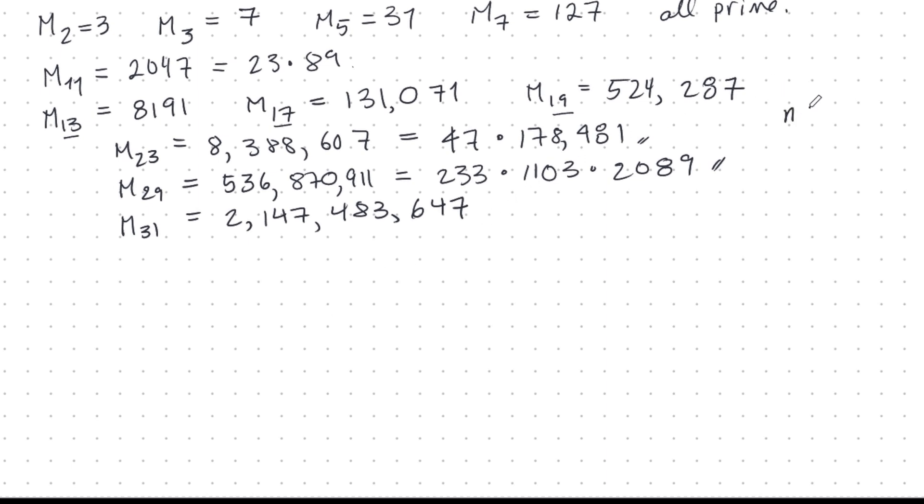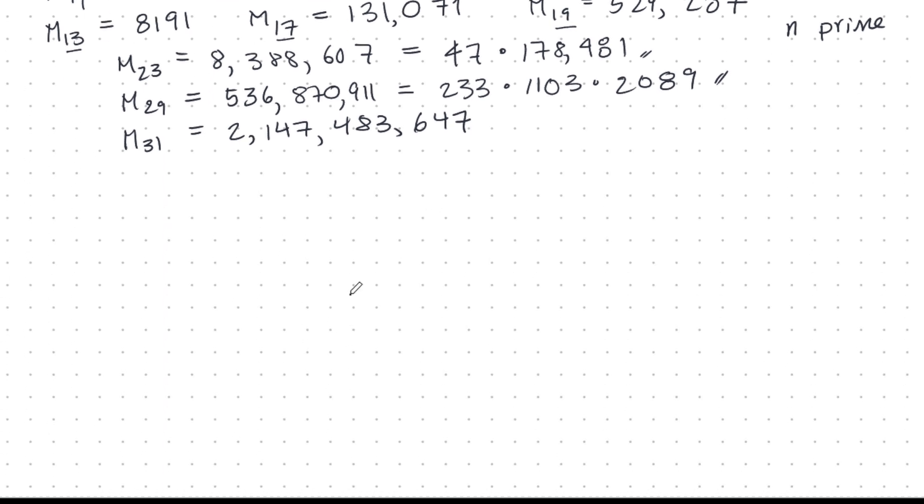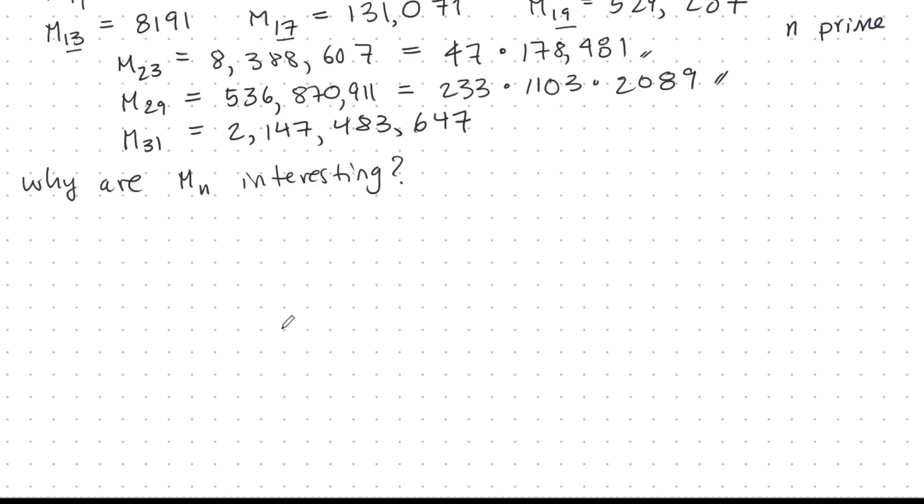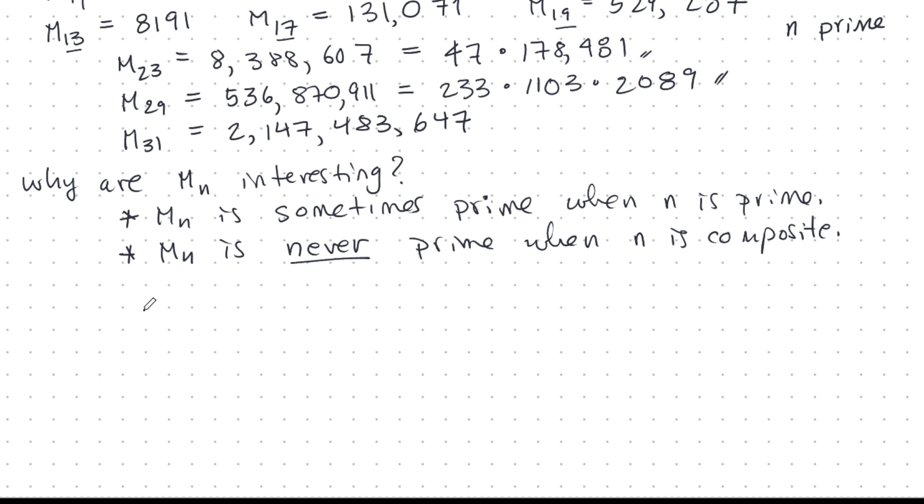Now, notice that we took here n is always prime, and that's because those are the interesting Mersenne numbers. When n is not prime, it's a little bit less interesting. We'll see why in a moment. So, why are the Mersenne numbers Mn interesting? Well, the first thing is that Mn is sometimes prime, as we see here, sometimes prime when n is prime. However, Mn is never prime when n is composite.